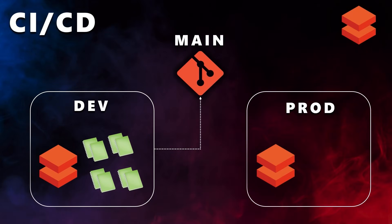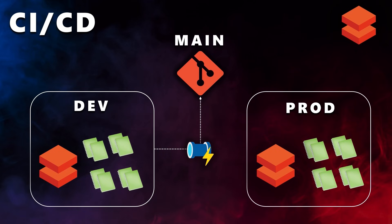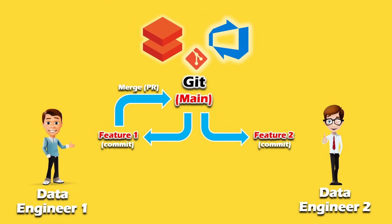Once the main branch gets updated with the latest changes, the CICD pipeline will get triggered, get all the latest changes from the dev environment, and deploy all the code to the prod environment. Once the pipeline has finished deploying all the changes, data engineer two can follow the same steps by creating another pull request to merge his changes from the feature two branch to the main branch. After merging, the CICD pipeline will again get triggered and deploy the latest changes to the prod environment. This is the merging technique we are going to use in the CICD process.